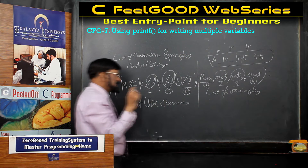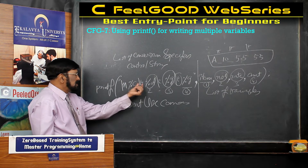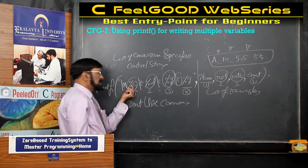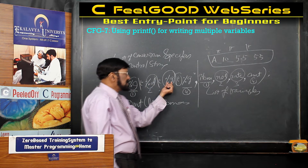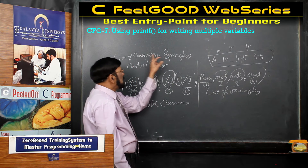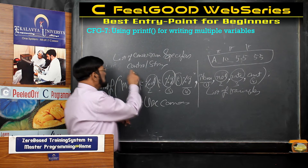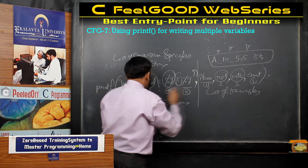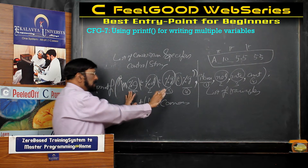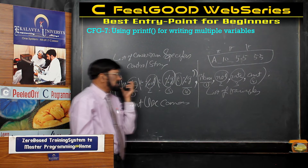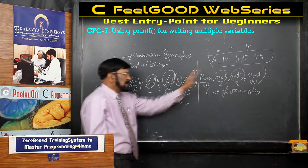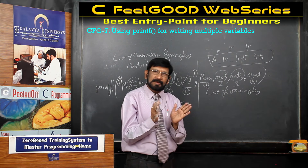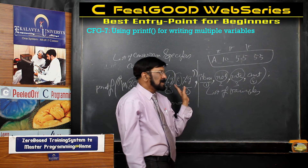This is a conversion specifier. This is another one — this is for char, this is for int, this is for float. So these are conversion specifiers in the control string only. In the control string, you should write conversion specifiers and escape sequences. On the other side, the matching list of variables in the same order you have to write. If your order is missing, it leads to error.